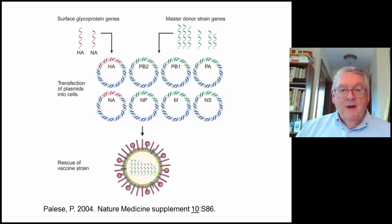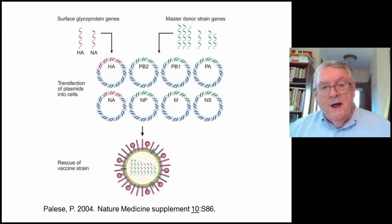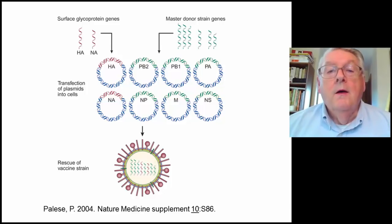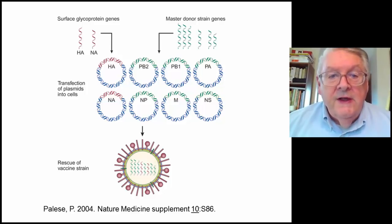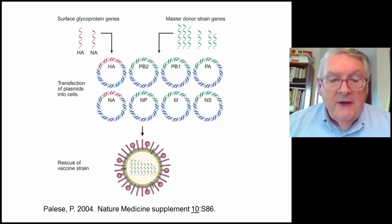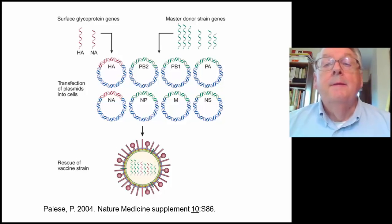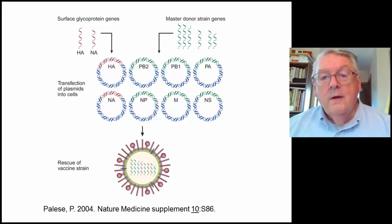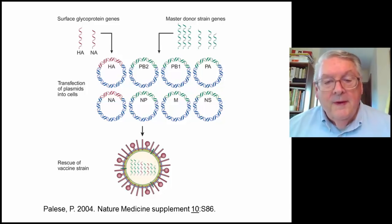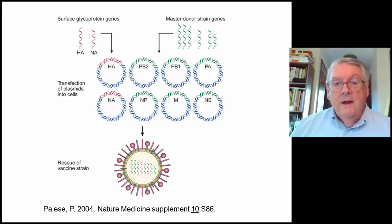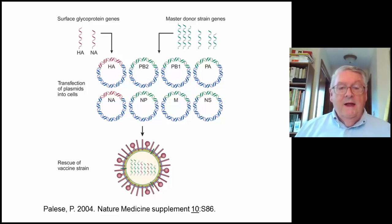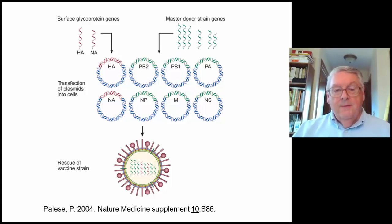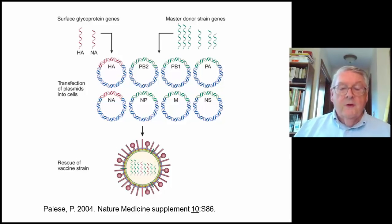With the ability to use recombinant technology, what they've done now is to make plasmids of each of the eight genes for the virus — the HA, NA, PB1, PB2, PA, NP, M, and NS. Those plasmids are put into a cell to make a new virus, which is a combination. Only the HA and the NA are specific for the current vaccine strain; the backbone comes from a Puerto Rico strain, which is well tolerated in people. Once they started using this approach, most of the problems with vaccines in the past have gone away.